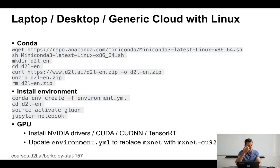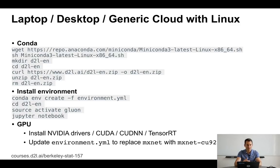If you have a generic cloud machine with Linux, or a Linux laptop or desktop, installation is fairly straightforward. You pull the latest Miniconda installer from Anaconda, get the latest version of the book from d2l-en.zip, and unzip it. Within that, you'll find an environment file which includes all the relevant packages. Then all that's required is: conda env create -f environment.yml. And you're done. Then just activate gluon — that's the environment we're providing — with source activate gluon, then run jupyter notebook.